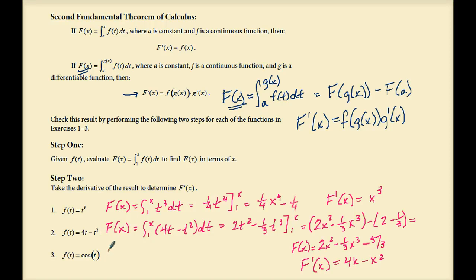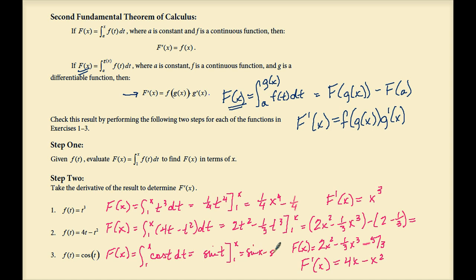Exercise 3: F of x is the integral from 1 to x of cosine t dt, which equals sine t from 1 to x, giving sine x minus sine 1. Therefore F prime of x is cosine of x — again the original f of t with x as the variable.